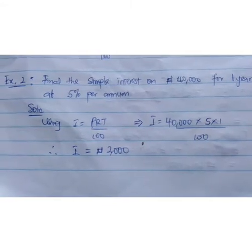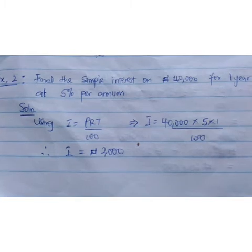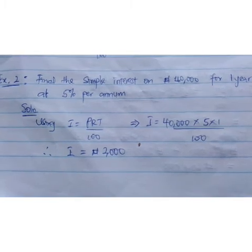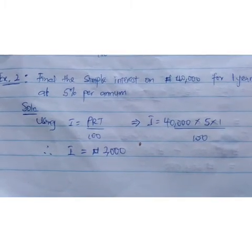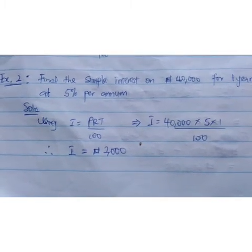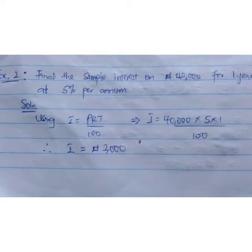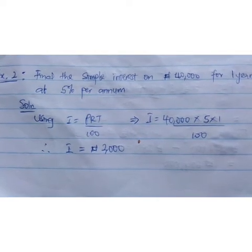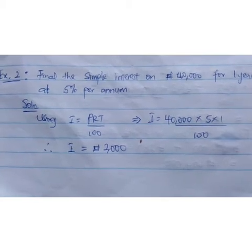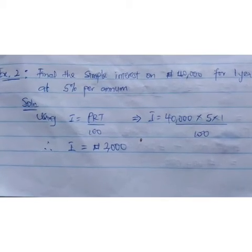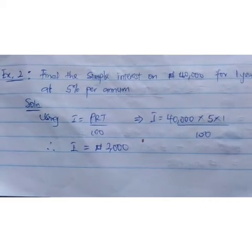Example 2: Find the simple interest on 40,000 naira for 1 year at 5% per annum. Solution — using I equals PRT over 100, we have I equals 40,000 naira times 5 times 1 over 100, leaving our answer to be 2,000 naira, which implies that the interest is 2,000 naira.